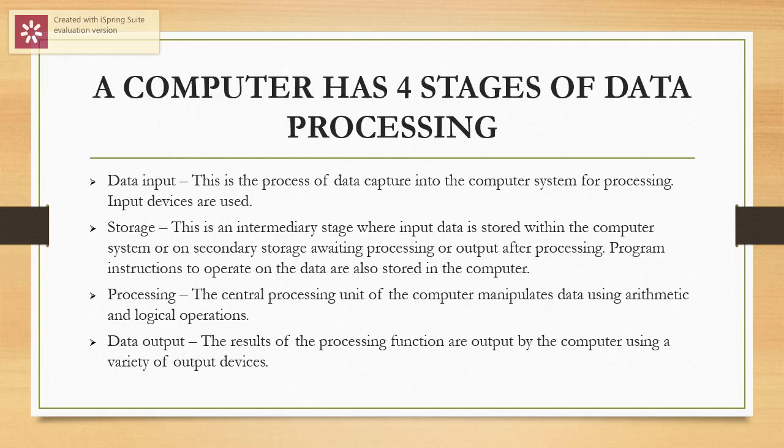A computer has four stages of data processing. The first stage is data input, which is the process of data capture into a computer system for processing. Input devices are used in this stage. Secondly, we have storage, which is an intermediate stage where input data is stored within the computer system or on secondary storage awaiting processing or output after processing.